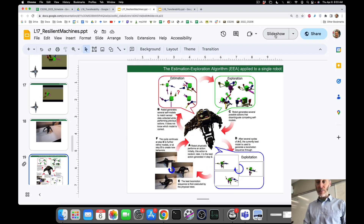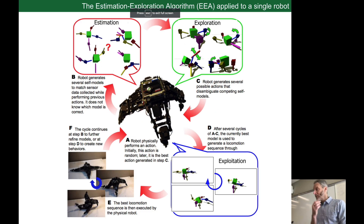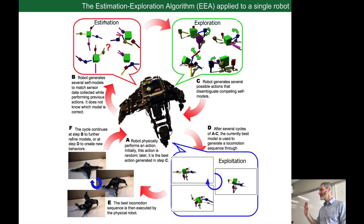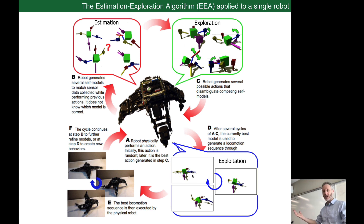We were talking about a project that I was a part of to try and cross the reality gap, which has the terrible name of the Estimation Exploration Algorithm — terrible for several reasons. One of them is that it's not true. There are actually three E's involved in this project, three evolutionary algorithms.